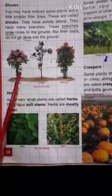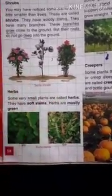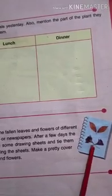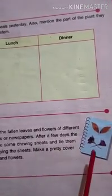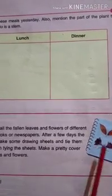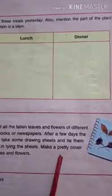Our question and answer is completed. Now I will give you some drawing. You have to draw two shrubs and two herbs. One more thing you have to do in your general science notebook — that is the activity. You have to paste five different types of dried leaves with their names.